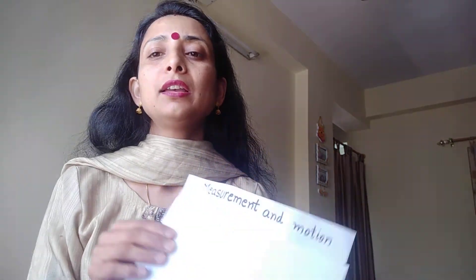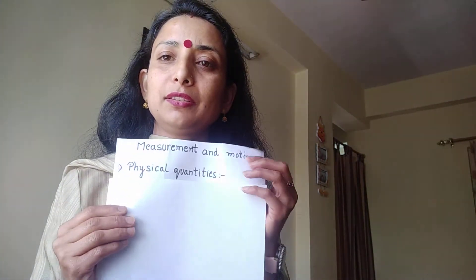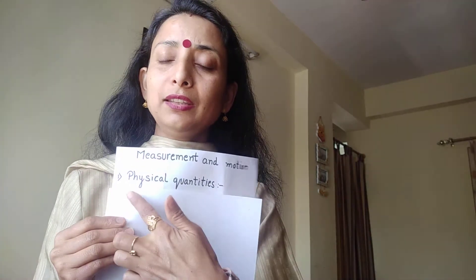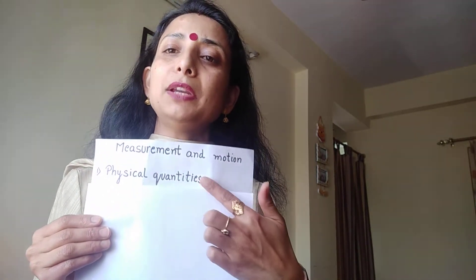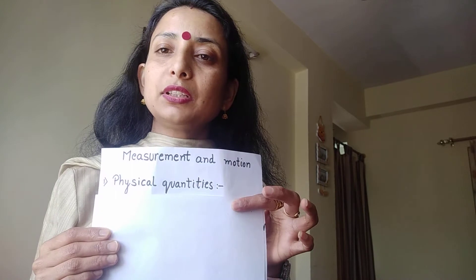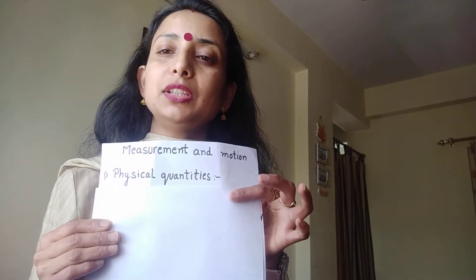All items like vegetables, fruits, milk, cloth material, or any item of your home which can be easily measured are known as physical quantities. The things which can be easily measurable are known as physical quantities.